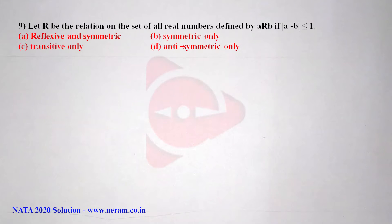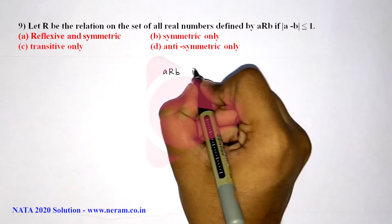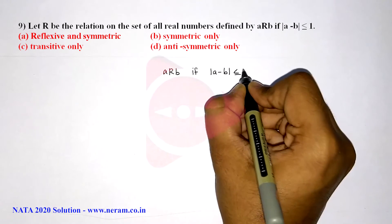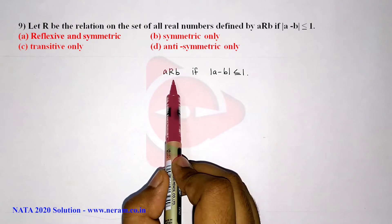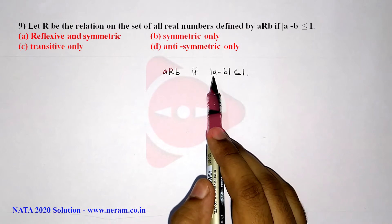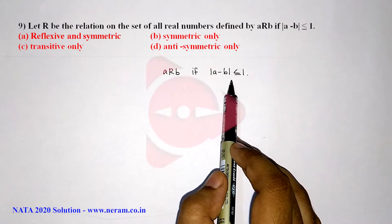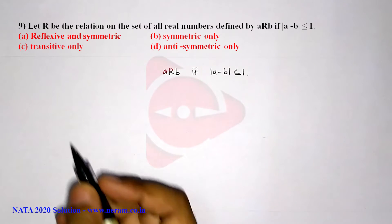A relation R on the set of real numbers is defined by aRb if modulus of a minus b is less than or equal to 1. We have to find the properties of this relation.